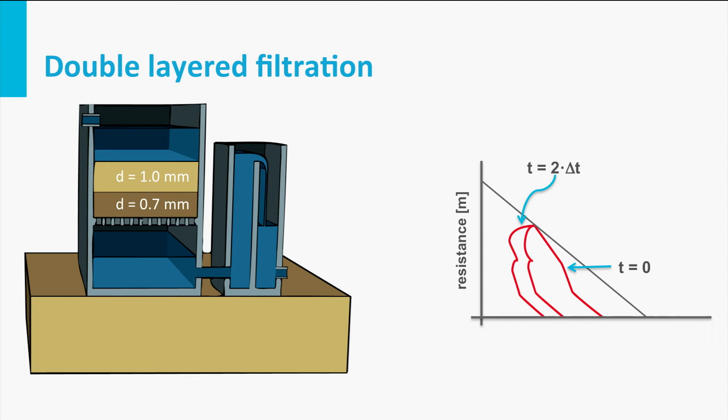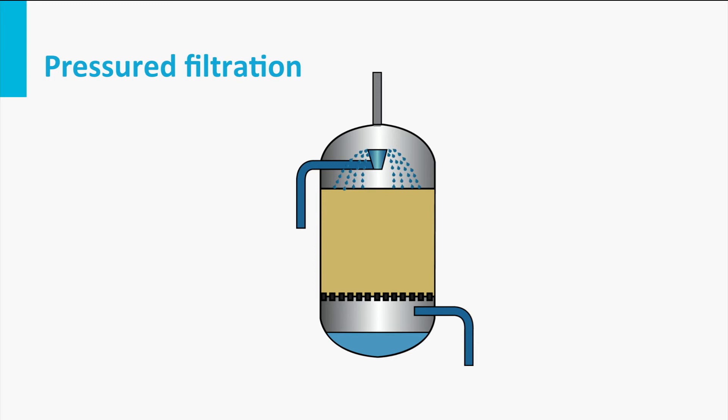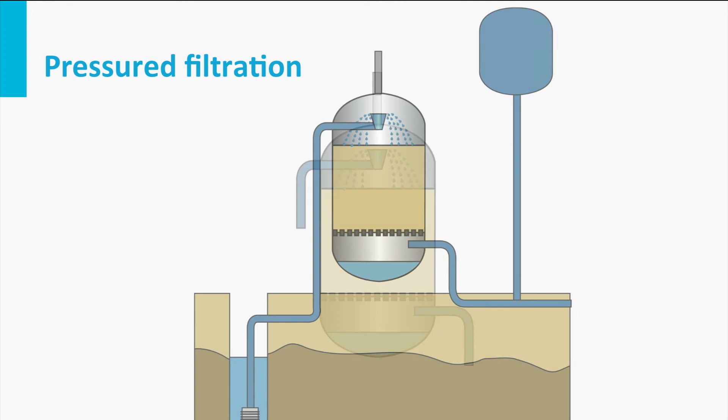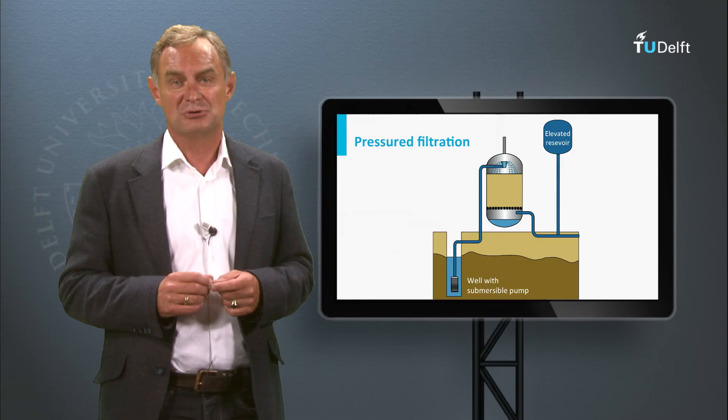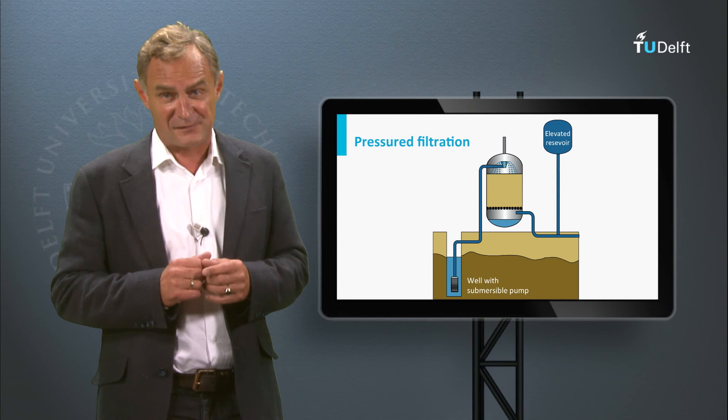Pressure filters are frequently used in industry because of their flexibility and the possibility to maintain high filtration velocities and long filter run times while keeping the grain size small. This is achieved by increasing the pressure on the filter. Water can even be pumped directly through the filter to an elevated water storage. However, a drawback of pressure filters is their sensitivity to filter troubles.